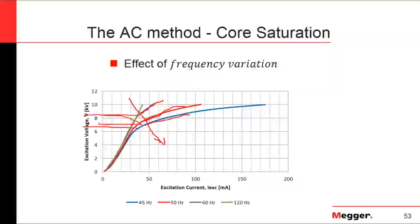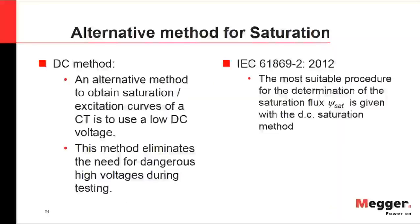Based on this concept, an alternative proposed method to measure saturation curves on high-voltage protection CTs is the DC method. This is an alternative technique to obtain saturation and excitation curves using very low DC voltage. It completely eliminates the need for dangerous high AC voltage — potentially 4000 V or higher — and IEEE states this is the most suitable procedure for determination of the saturation flux linkage.